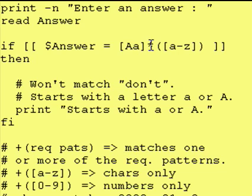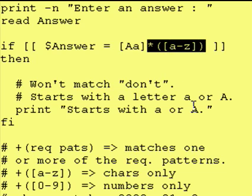once again, the asterisk means optional, or anything that is a lowercase a through lowercase z. So it will find words, basically. Well, it may not be a word, but it will find anything that starts with an uppercase a or a lowercase a and then has characters after it.